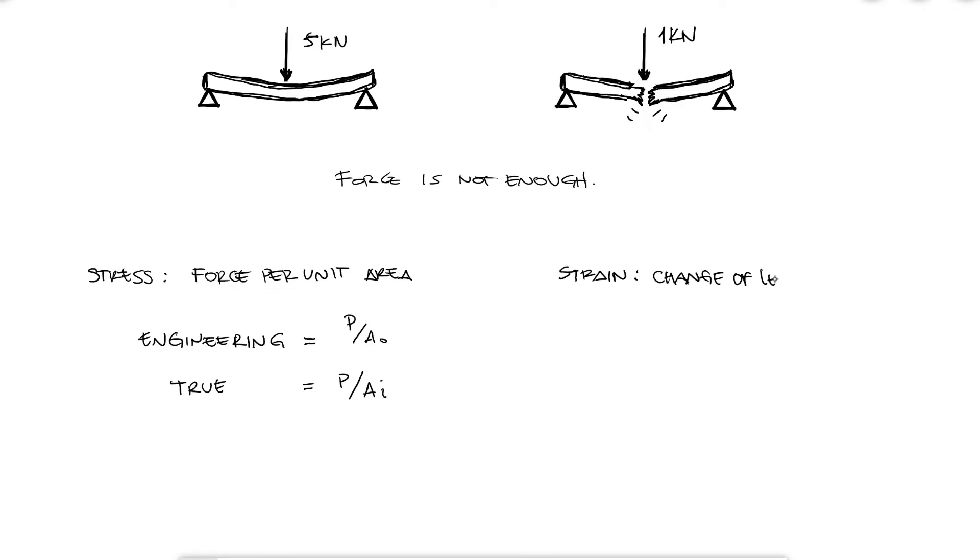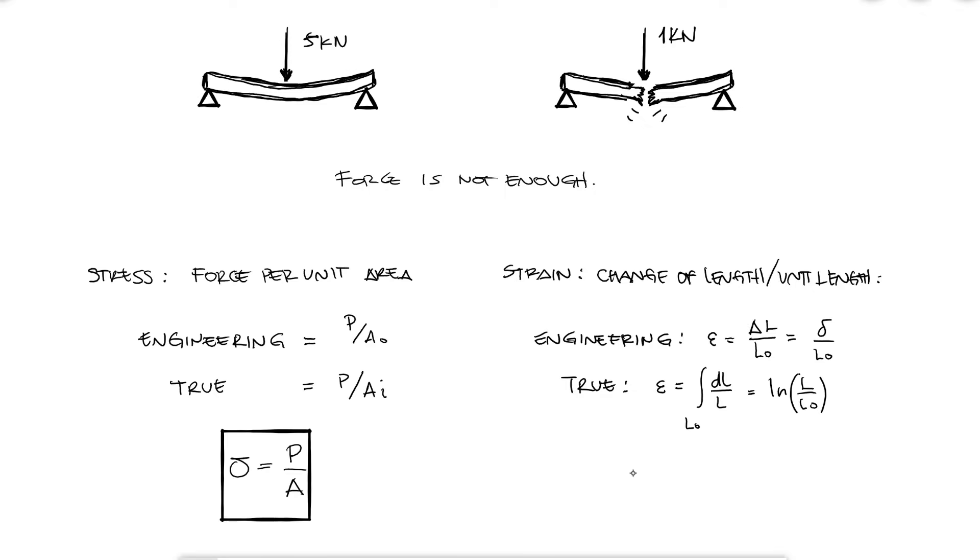Strain is defined as the change of length per unit length. And again, there's a difference between engineering strain and true strain, where engineering strain is the change of length over the original length, and where true strain is the integral of dL over L integrated from the initial length. In most engineering applications, we end up using the engineering stress and the engineering strain, and since we don't need to make a distinction between initial area or instantaneous area, we just call this axial strain load over area, and the engineering strain deflection or displacement over length.